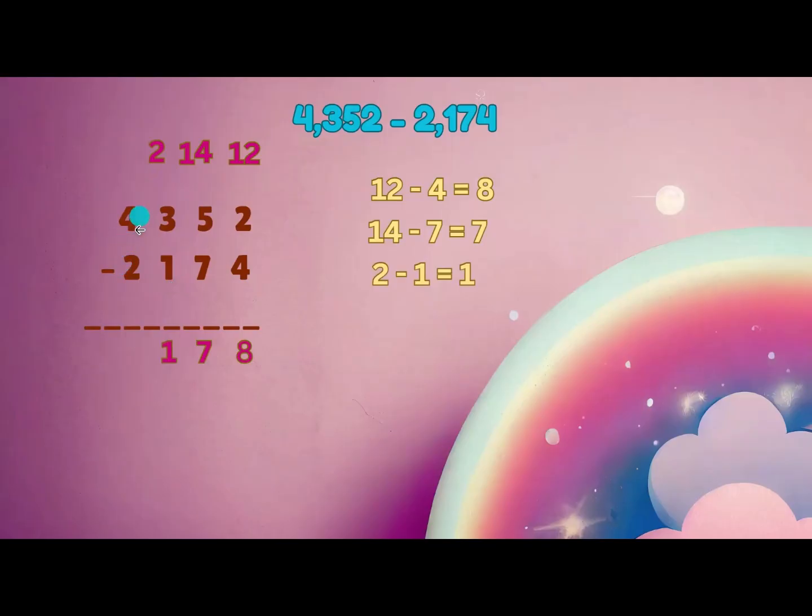4 minus 2 is equal to 2. Answer is 2178. Let's have a small dance break and continue.